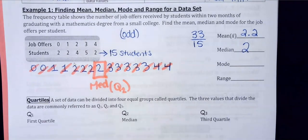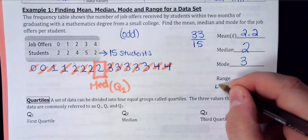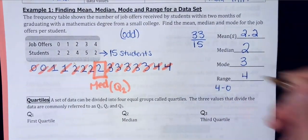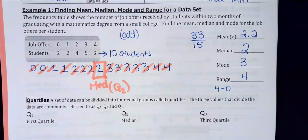The median is 3. The mode is three because it appears five times. The range is four — the biggest number, four, minus the smallest number, zero, equals four.